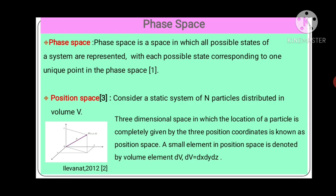Position of this particle P is specified by three mutually perpendicular axes x, y, z. So P has coordinates x, y, z. Position vector P is R. Three-dimensional space in which location of particle is completely given by three position coordinates is known as position space. And a small element in position space is generated by volume element dV. So dV is equal to dx, dy, dz.